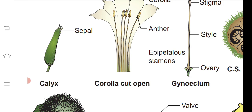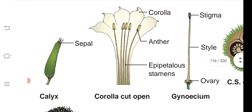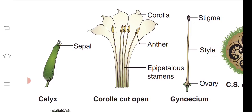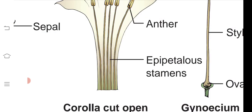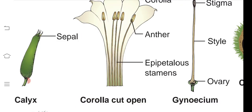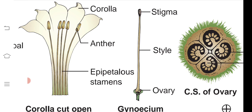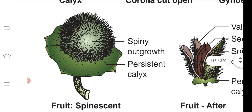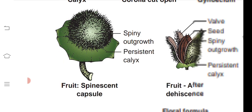Looking at the sepal, it is gamosepalous — fused with each other. Once the sepals are removed, the petals are found with the androecium attached; they cannot be separated easily because the stamens are epipetalous — meaning the stamens are attached on top of the petals. In the center, as usual, you find the style, stigma, and ovary as the gynoecium. A cross-section of the ovary shows its structure.